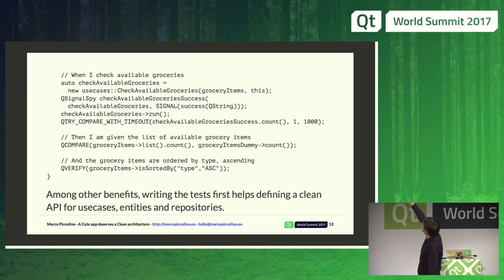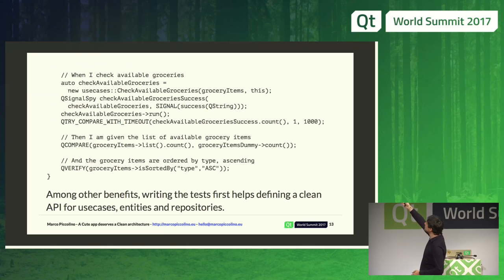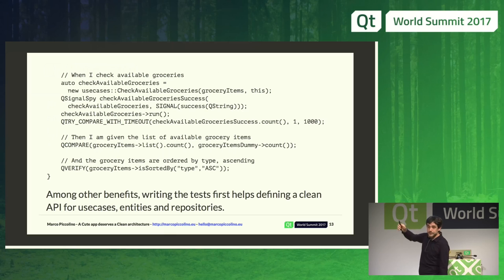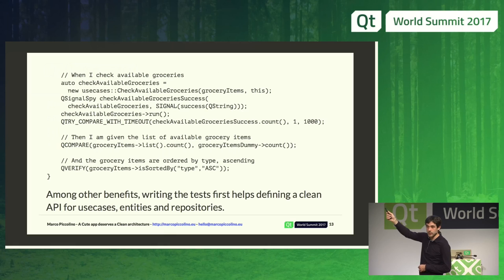Then comes 'when I check my available groceries' — that's when I run my use case. I have a use case object called UseCases::CheckAvailableGroceries, to which I pass my entity (the grocery items list). I use a QSignalSpy to verify that my use case completed correctly, looking at the success signal.